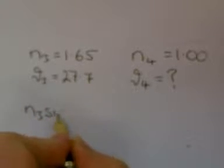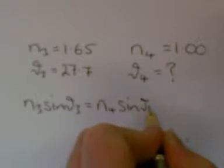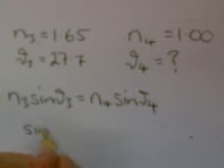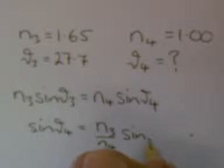Write down the equation we will use: Snell's law. N3 sin theta 3 equals N4 sin theta 4. Rearrange the equation to get sin theta 4 equals N3 divided by N4 times sin theta 3.